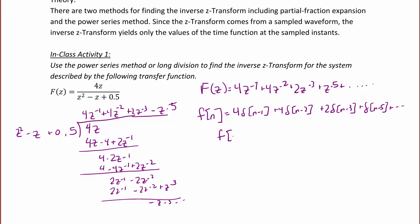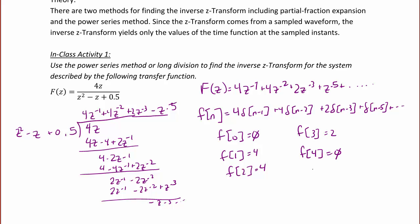From here we see that F of 0 is equal to 0, F of 1 is equal to 4, F of 2 is equal to 4, F of 3 is equal to 2, F of 4 is equal to 0, and finally F of 5 is equal to 1.